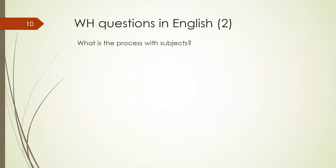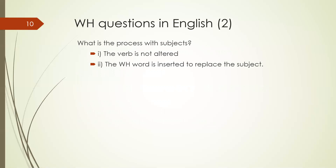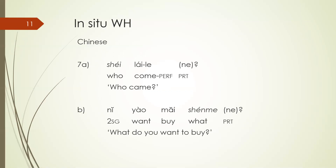Questions have different kinds of structures from other parts of language. When it comes to subjects, if we go back to 'the boy saw the birds,' we've been testing how you question the object — the birds. But with subjects the process is simpler: the verb is not altered and the WH word is inserted to replace the subject. So 'the boy saw the birds' becomes 'Who saw the birds?' — and that's the only way you can ask that question. With the object you could say 'what did the boy see' or 'the boy saw what,' but with the subject there is no alternative.